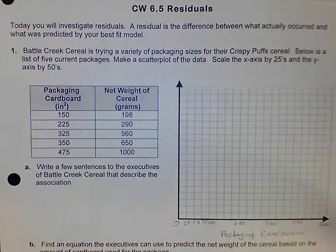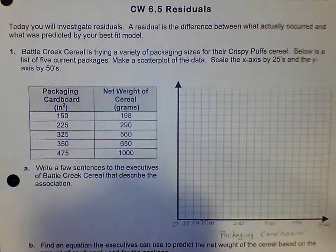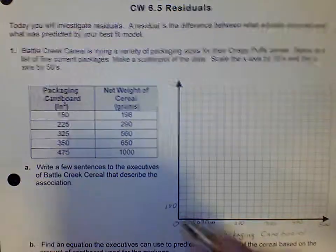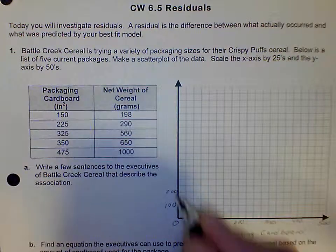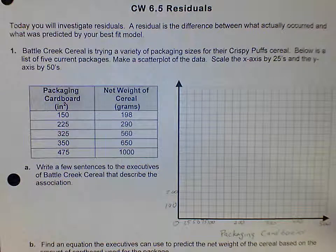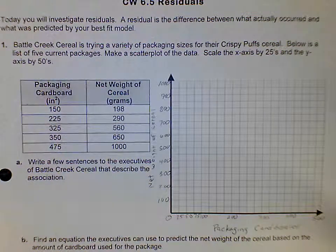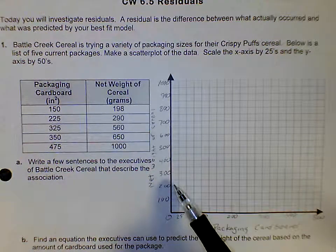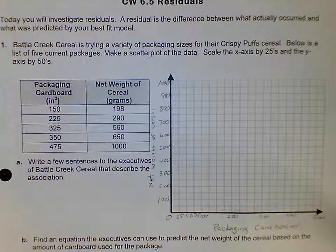On the y-axis it's going to be the net weight of cereal in grams, and we're going to go by 50s. Once again I'll just count by 100 so that it fits easier: 50, 100, 150, 200. Go ahead and finish plotting the y-axis. Perfect. So I scaled my y-axis by 50s but I only wrote every 100, and I also wrote my label which is net weight of cereal.